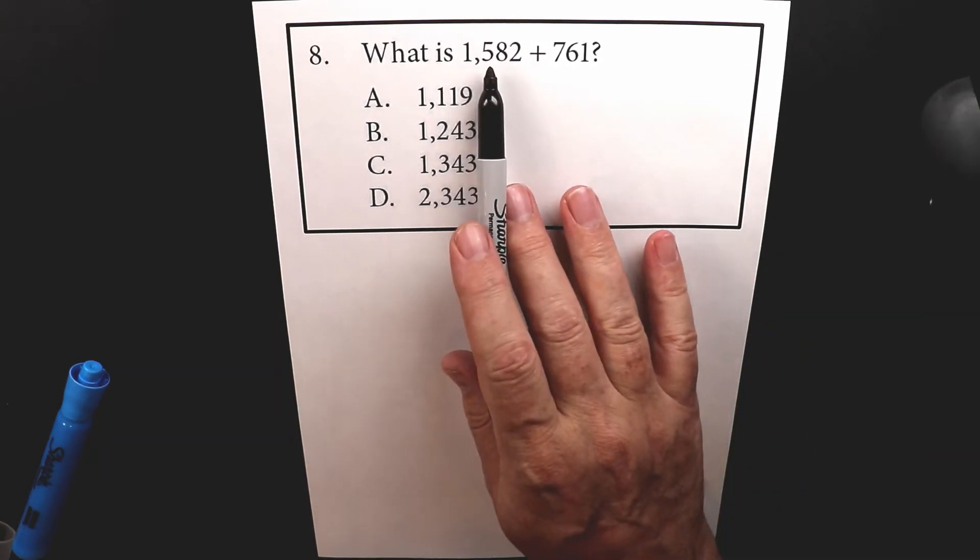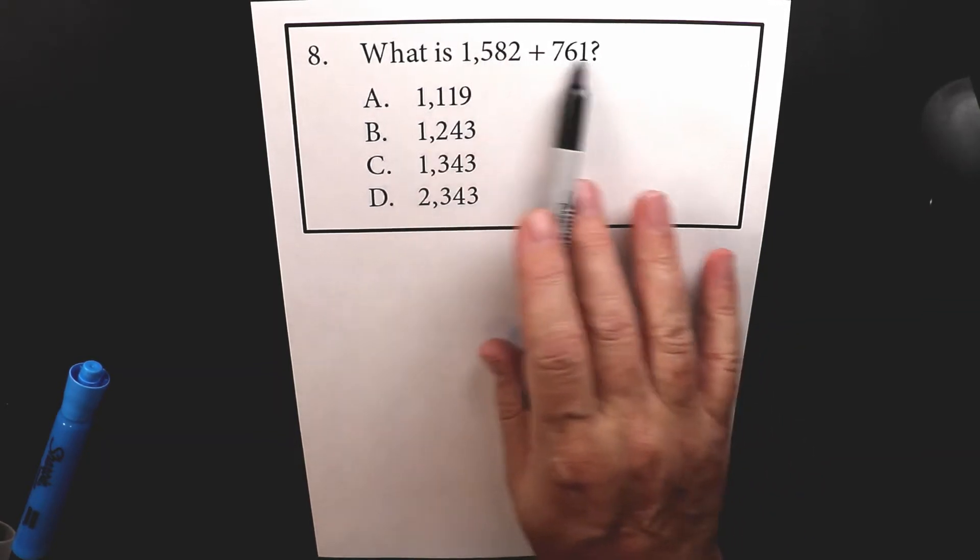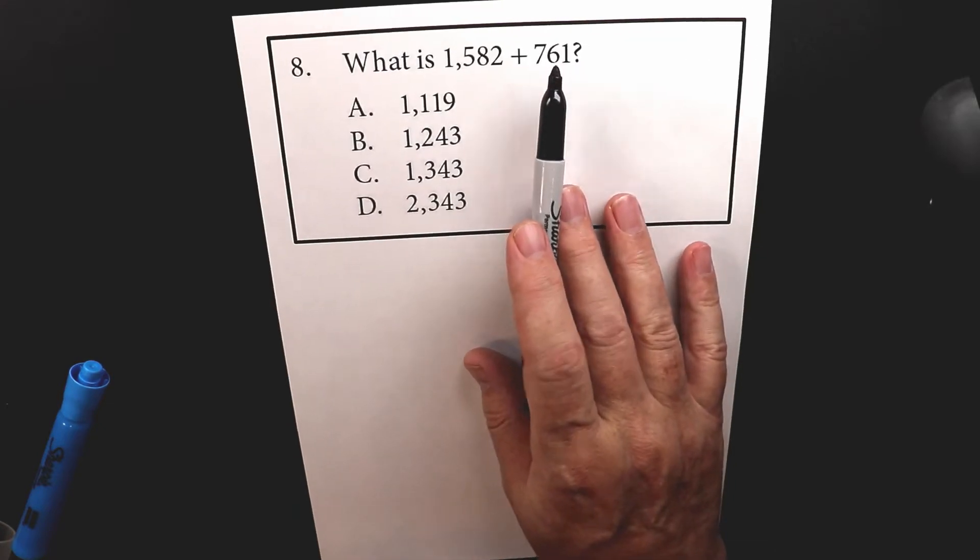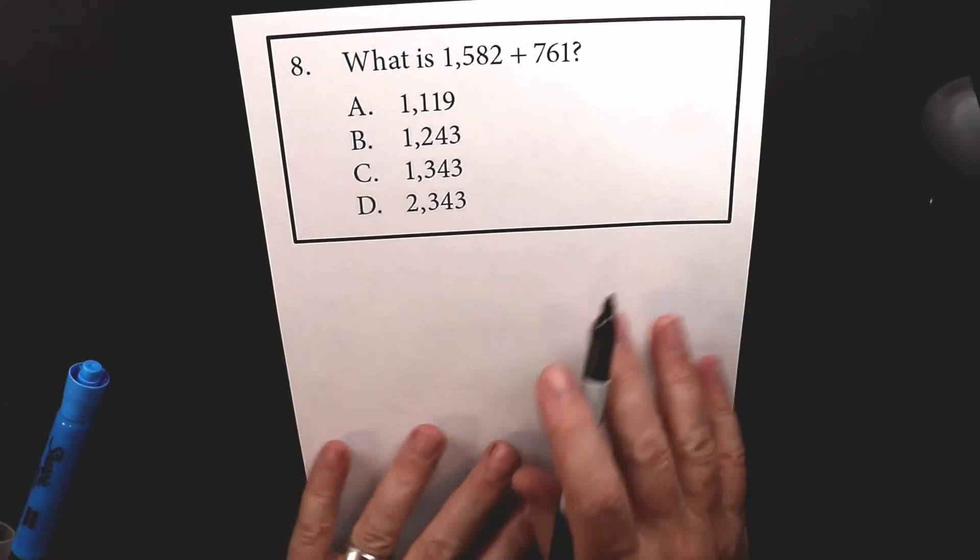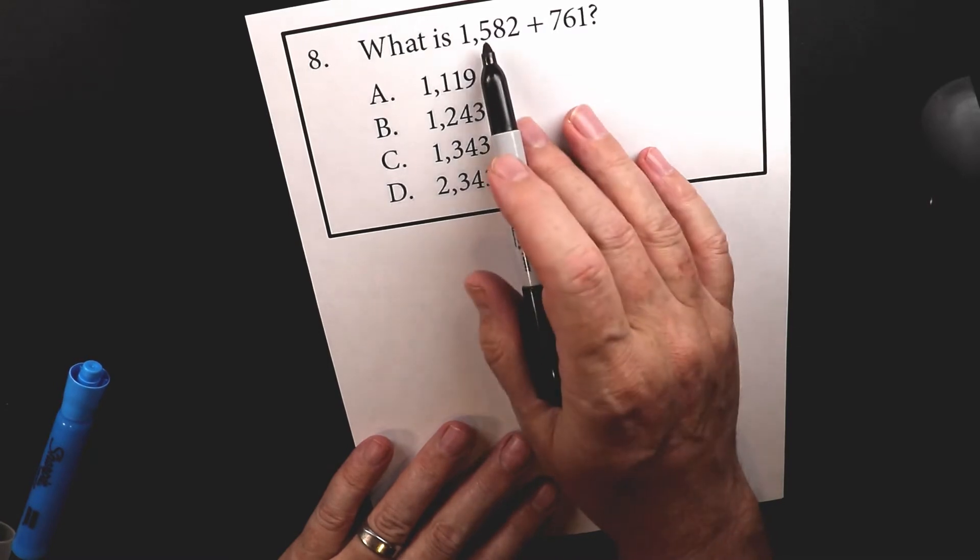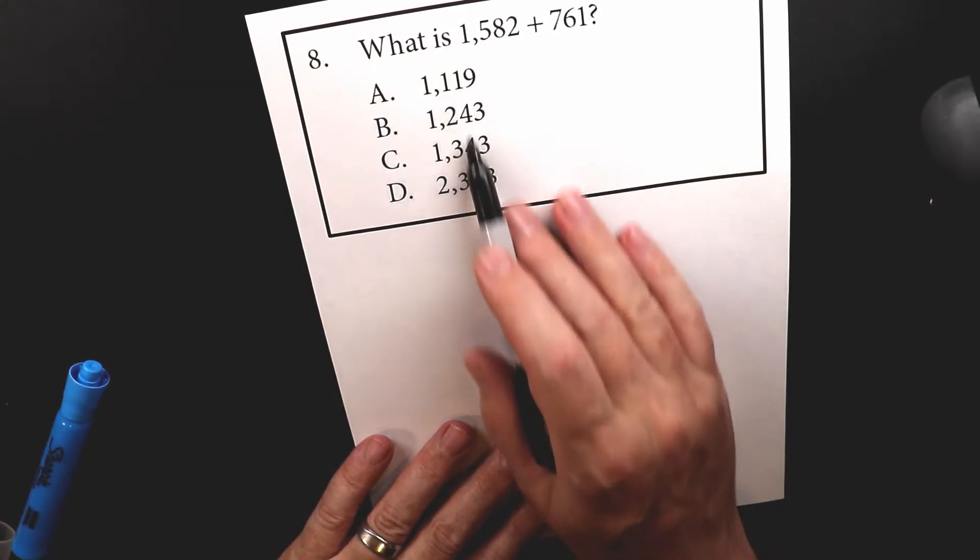Now, any time I get an addition problem that's written horizontally, left and right like this, I always set it up vertically, top and bottom. And when I do it, I make sure I keep the columns nice and straight.